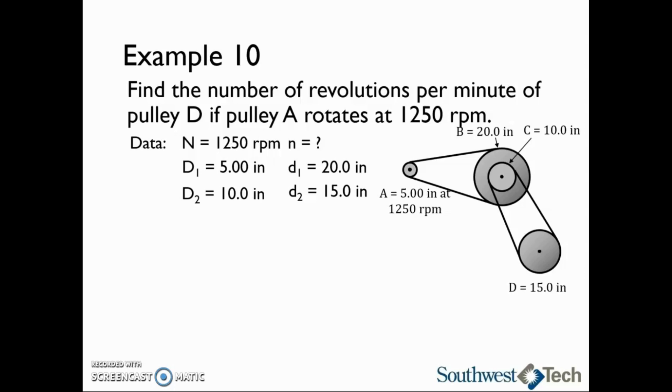Since we only have two belts, we need a D1 and a D2 in our equation. The basic equation is capital N times capital D1 times capital D2 equals lowercase n times lowercase d1 times lowercase d2.